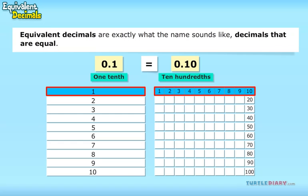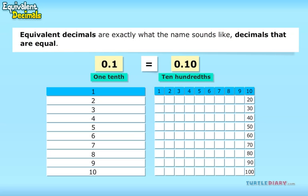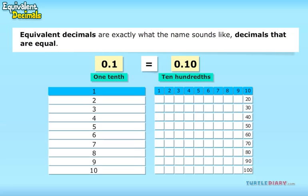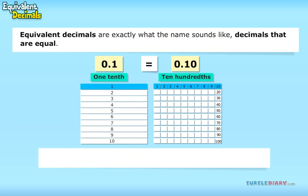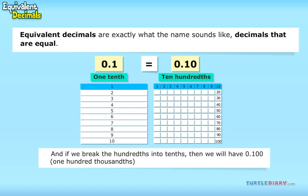That is because each tenth has been broken up into ten equal parts. And if we break the hundredths into tenths, then we would have 0.100, which also equals 0.1.